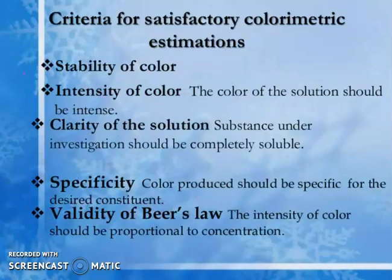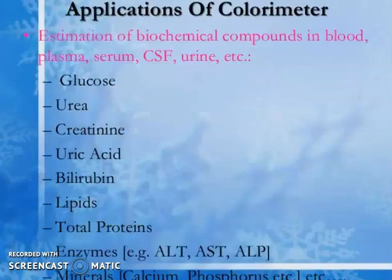Criteria for satisfactory colorimetric estimation: stability of color, intensity of color (the color should be intense), clarity of the solution (the substance should be completely soluble), specificity (the color produced should be specific for the desired constituent), and validity of Beer's law (the intensity of color should be proportional to concentration).